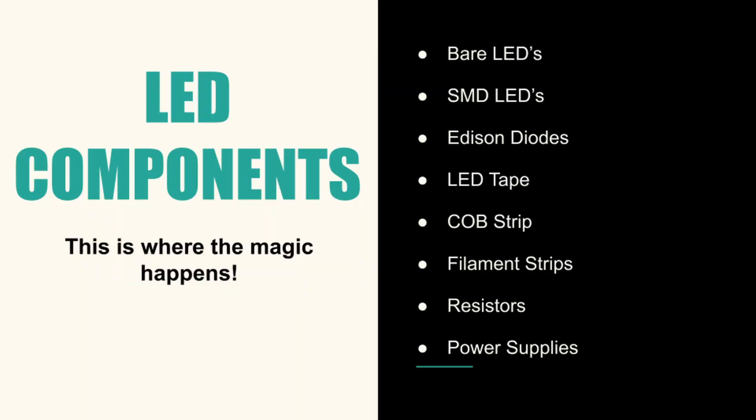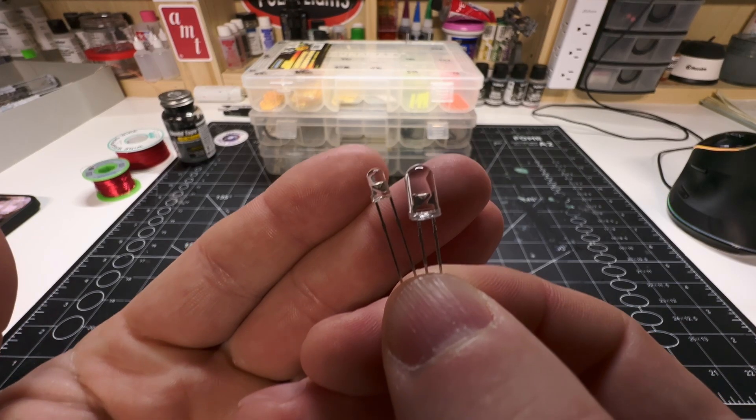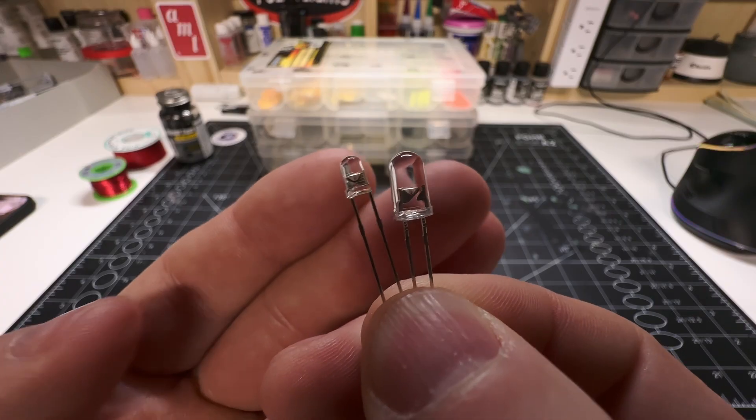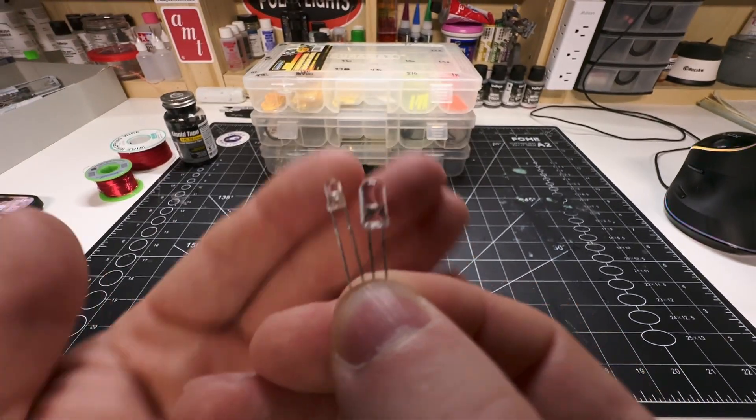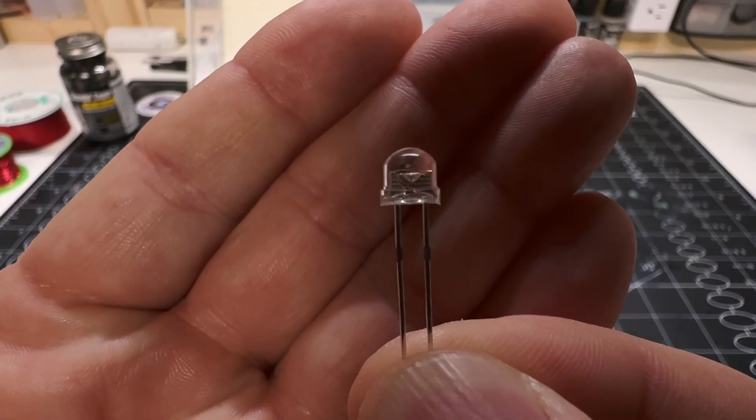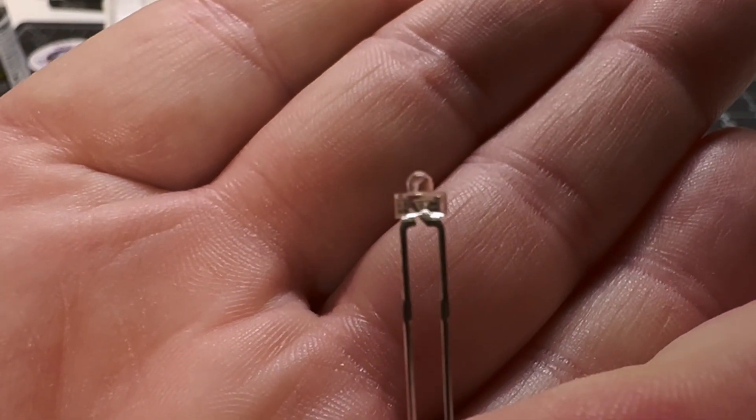Now for the stars of the show. Light emitting diodes. Bare LEDs are fantastic when you're starting out. The most common sizes are 3 and 5 mm, which cover most general modeling needs. But you'll also find other shapes and sizes. Flat tops, straw hat, rectangular, and tiny 1.8 mm LEDs.